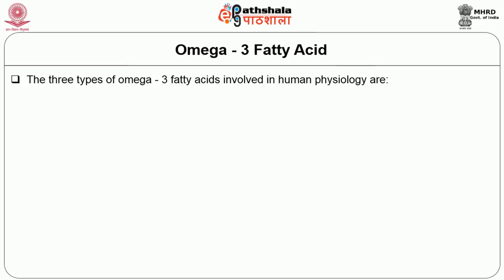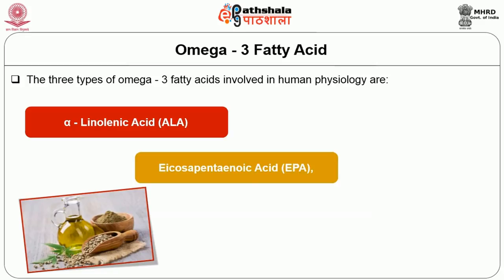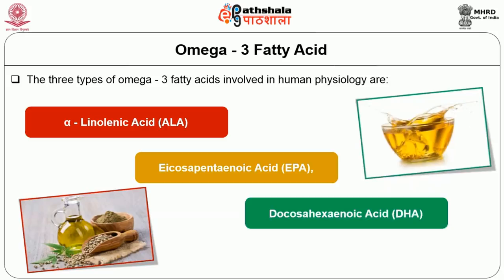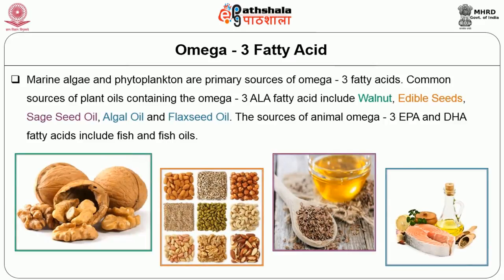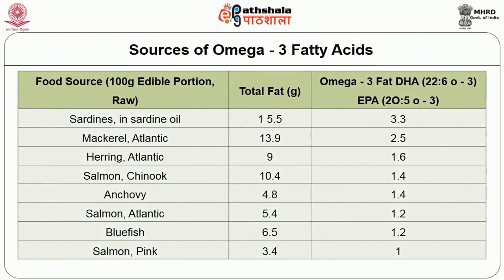The three types of omega 3 fatty acids involved in human physiology are alpha-linolenic acid (ALA), eicosapentaenoic acid (EPA), and docosahexaenoic acid (DHA). Marine algae and phytoplanktons are primary sources of omega 3 fatty acids. Common sources of plant oils containing ALA include walnut, edible seeds, sage seed oil, and flaxseed oil. Sources of animal omega 3 EPA and DHA include fish and fish oils.